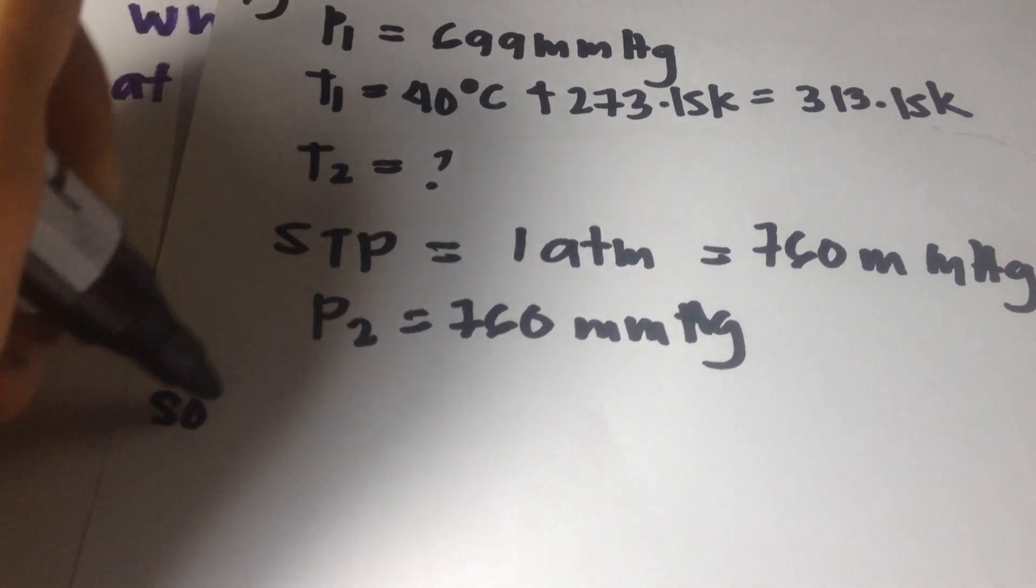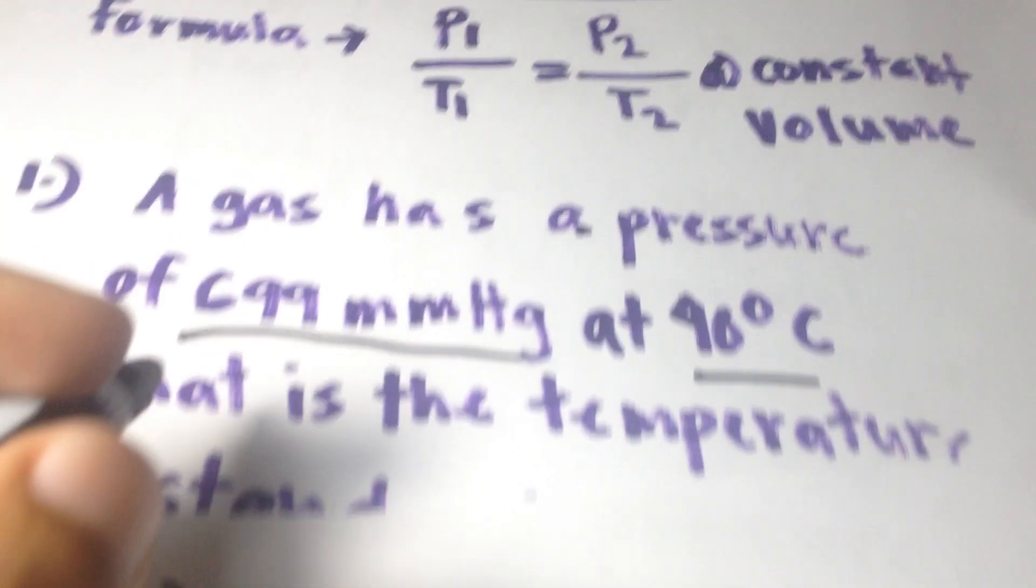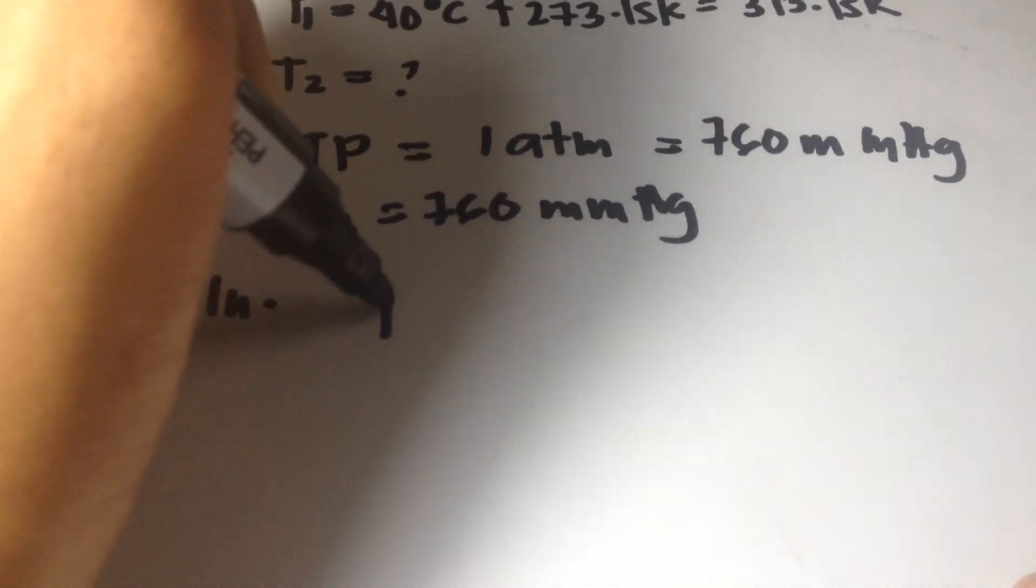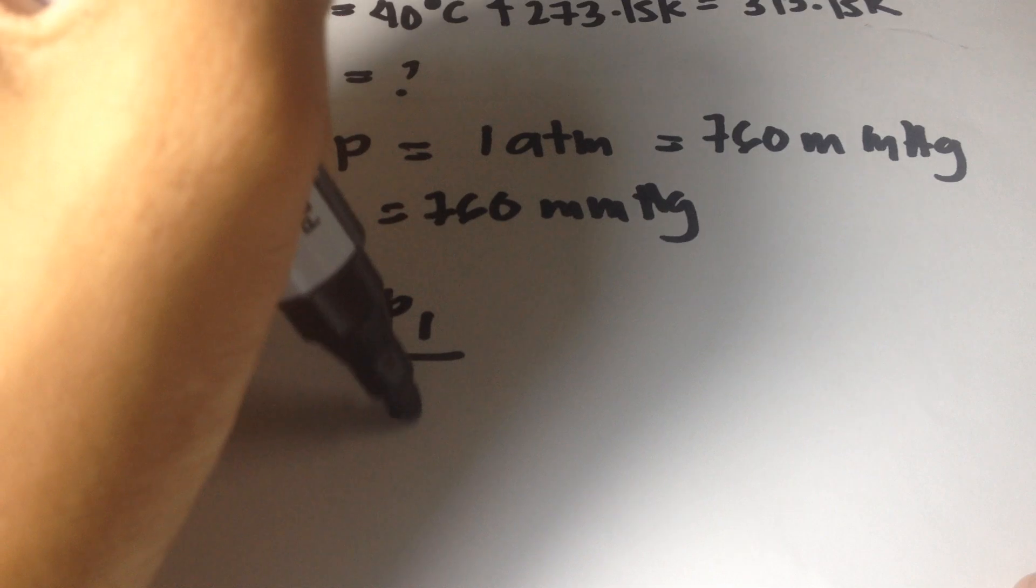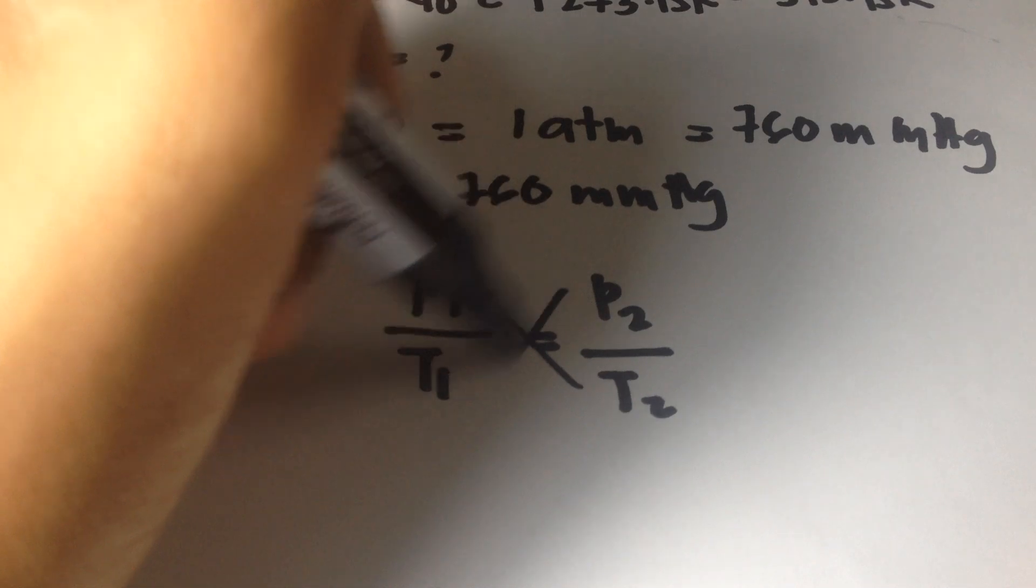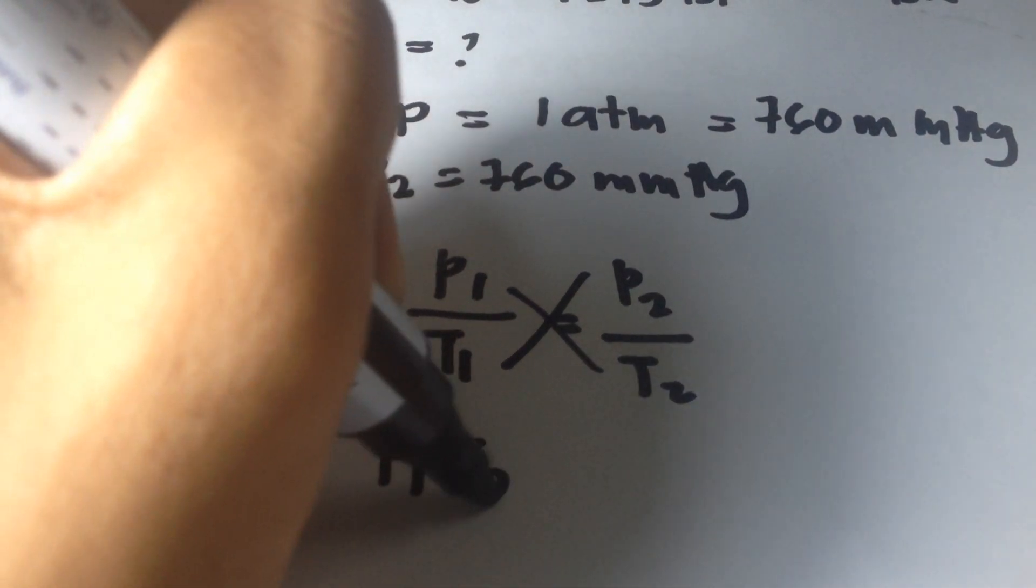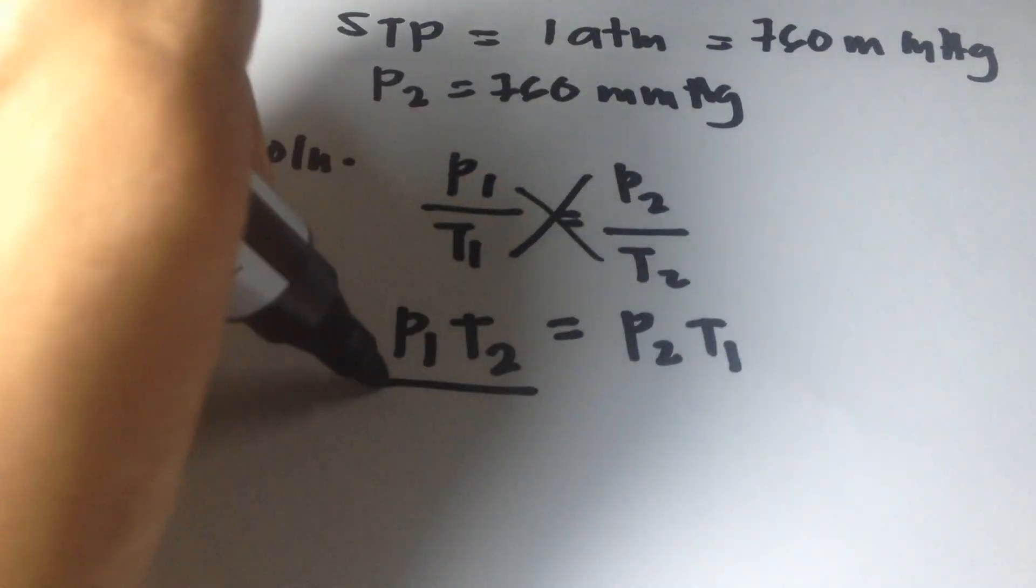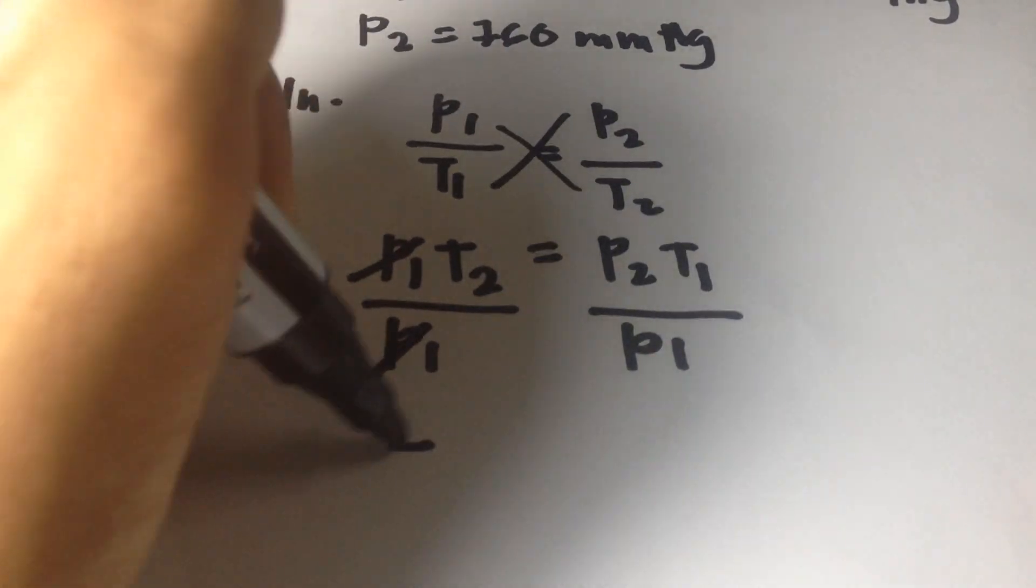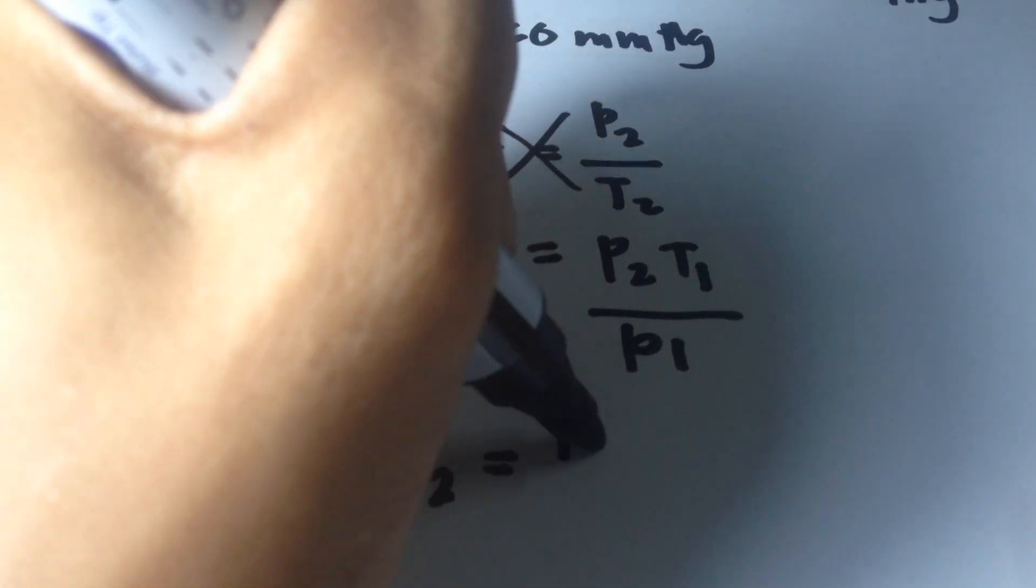Let's begin the solution. The formula is P1 over T1 equals P2 over T2. Let's solve for T2. We need to cross multiply. P1 times T2 equals P2 times T1. We need to divide both sides by P1 and cancel out P1. Then T2 equals P2 times T1 over P1.